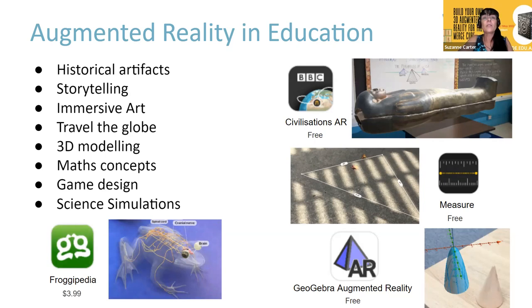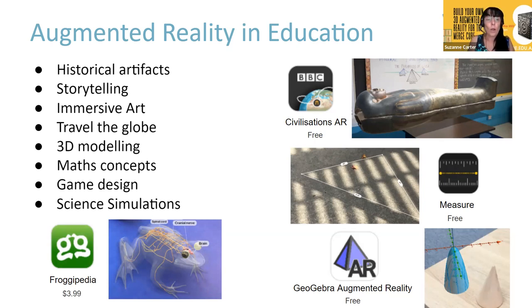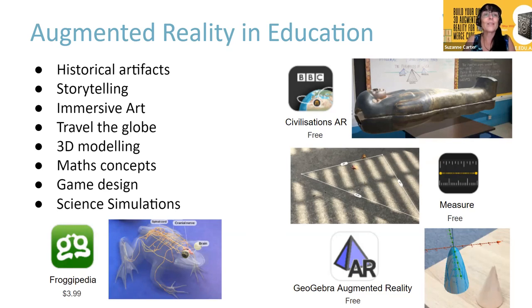There are also lots of science simulations. Augmented reality is great for things like biology, anatomy, physics and chemistry, where students can start to pull things apart in an AR way. The example here is Froggypedia — it's a $3.99 app that allows you to look at the life cycle of a frog, study the living animal, explore its organs and systems, understand the vocabulary, and even go into the dissection of the frog.